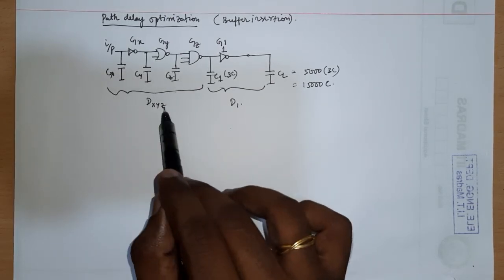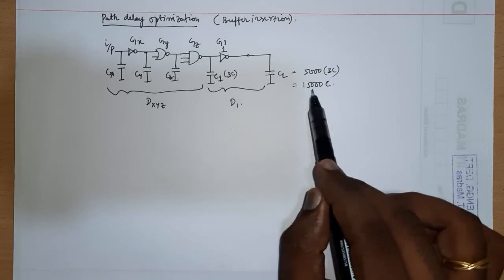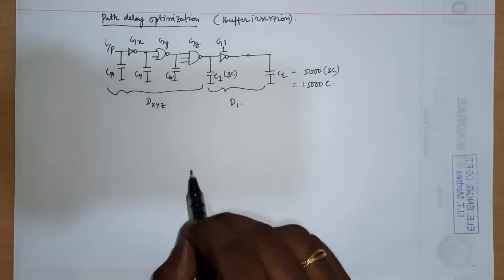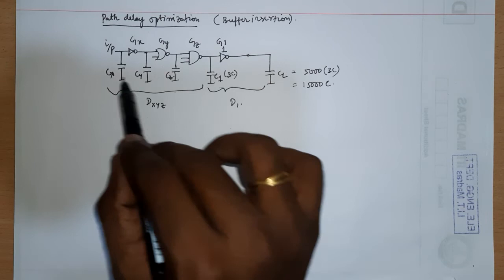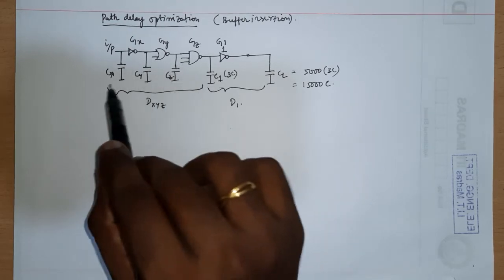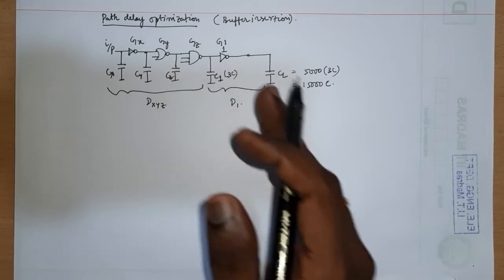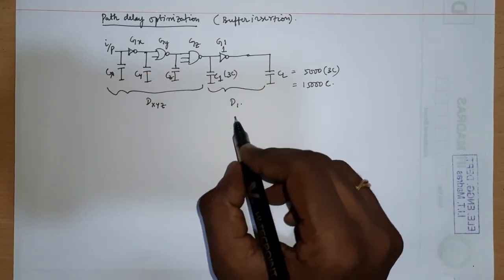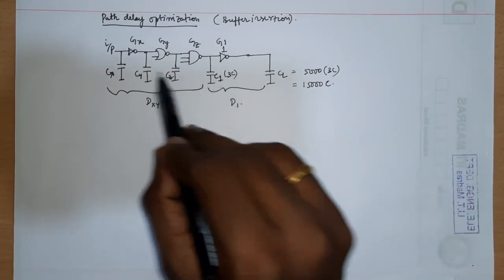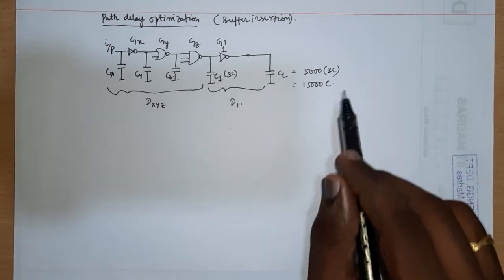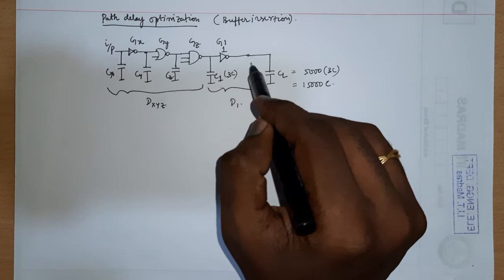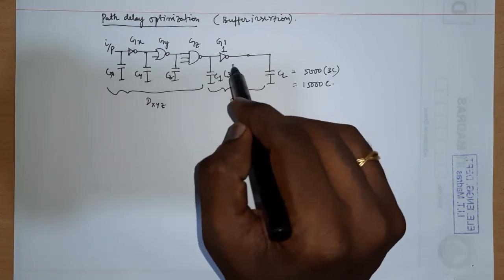Let me say the delay up to these three gates is delay-xyz. I know how to calculate it — we've done it earlier. Let me say this delay alone is D1. The total delay is dxyz, which is dx plus dy plus dz, and dxyz plus D1 is the total delay. It's easy to calculate given the capacitance values. The gate sizes, if somewhere around 1, 2, 3 and so on, won't produce very large individual delays. The problem is that the load capacitance the whole path drives at the end is very large.